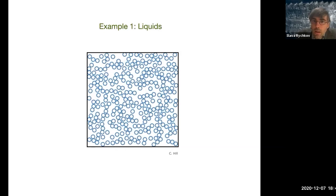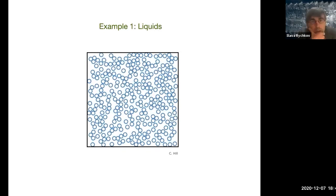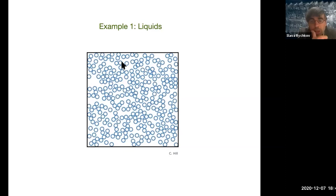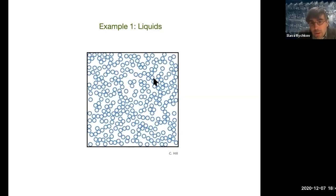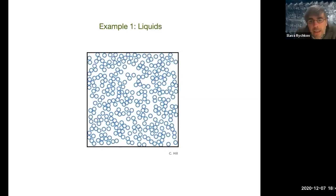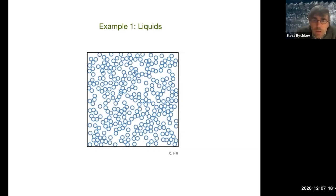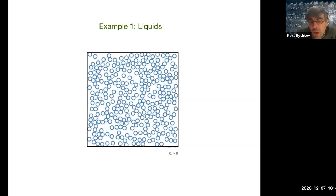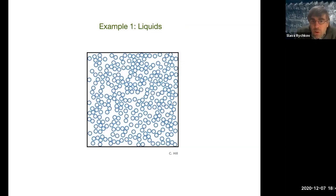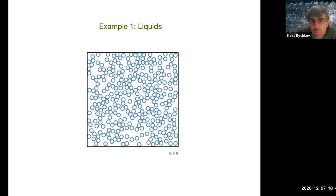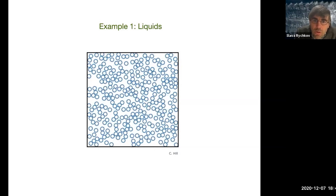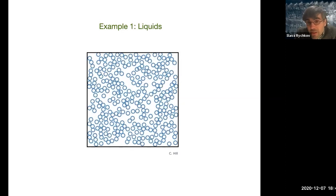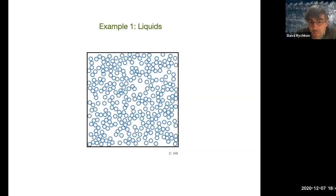My first example is a liquid. A liquid is made of many molecules in chaotic motion — they're bouncing off each other, somewhat densely packed. In this idealized movie, all molecules have a round idealized shape, but of course in real liquids the molecules are not round balls — they can have a complicated shape. But what's going to happen is that the shape of the molecules is not going to be important for how the liquid behaves. This is going to be my example of universality.